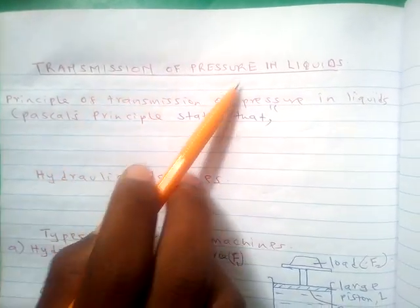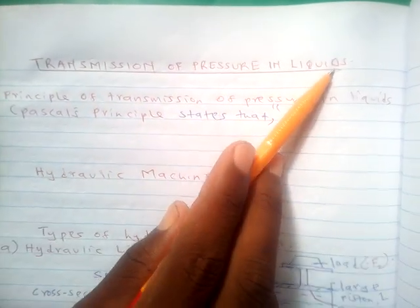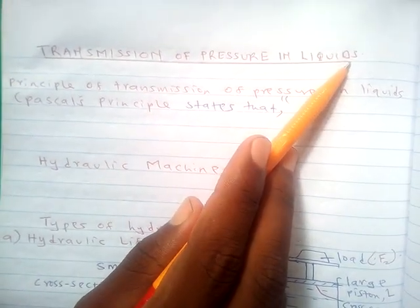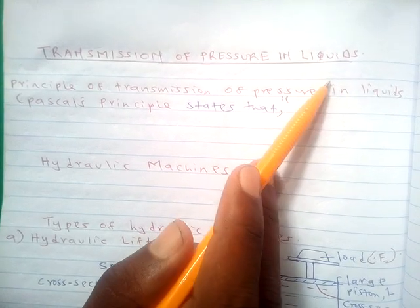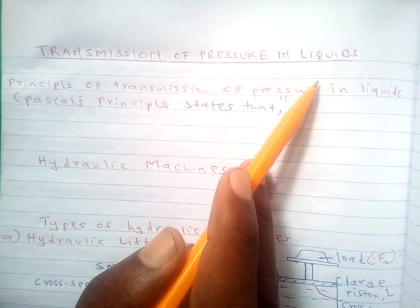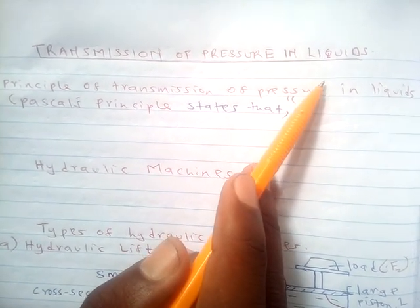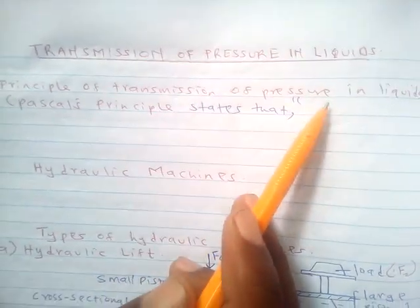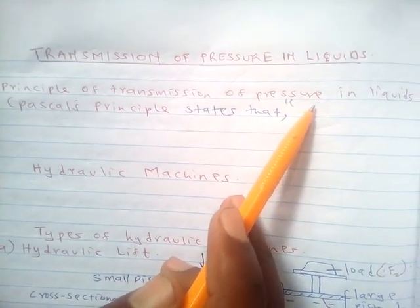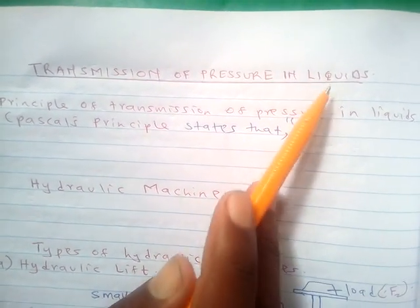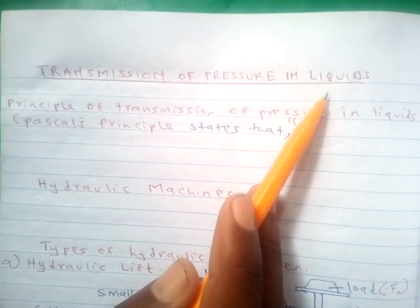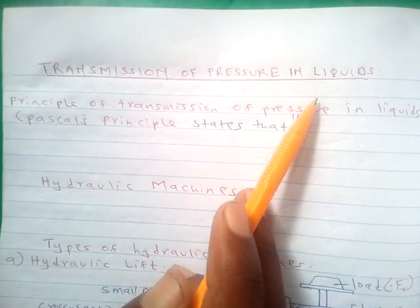Today we are looking at transmission of pressure in liquids. Remember the formulas that we were deriving the other day: pressure equals force over area, which is applicable for solids. But when it comes to liquids, we use P equals H rho g.